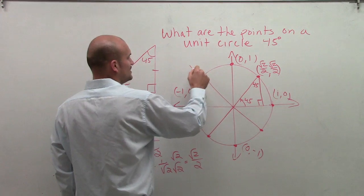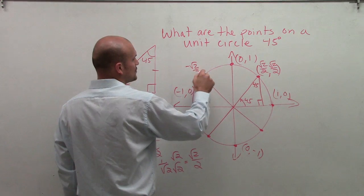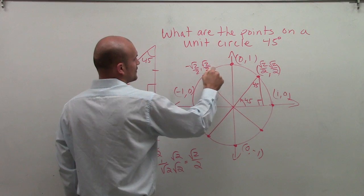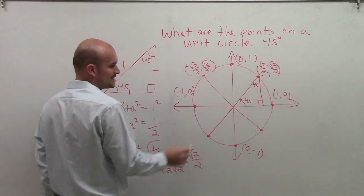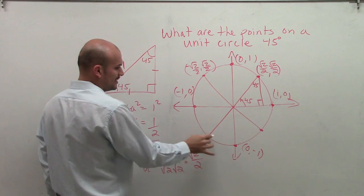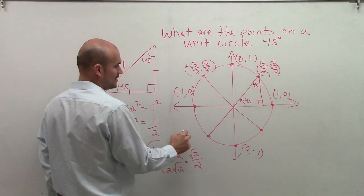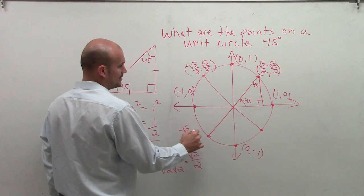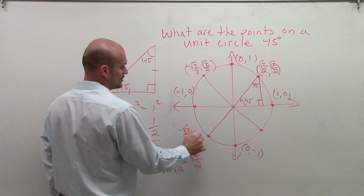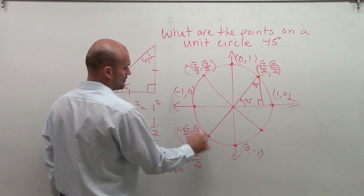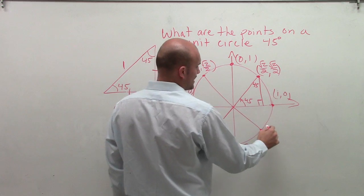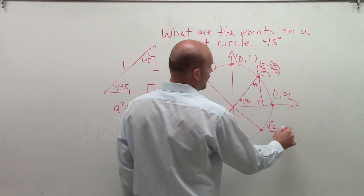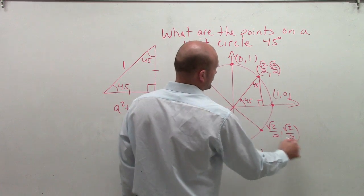So this point is negative square root of 2 over 2, square root of 2 over 2, because in the second quadrant the x-coordinate is negative. Here, both x and y are negative: negative square root of 2 over 2, negative square root of 2 over 2. And at this point, x is positive but y is negative.